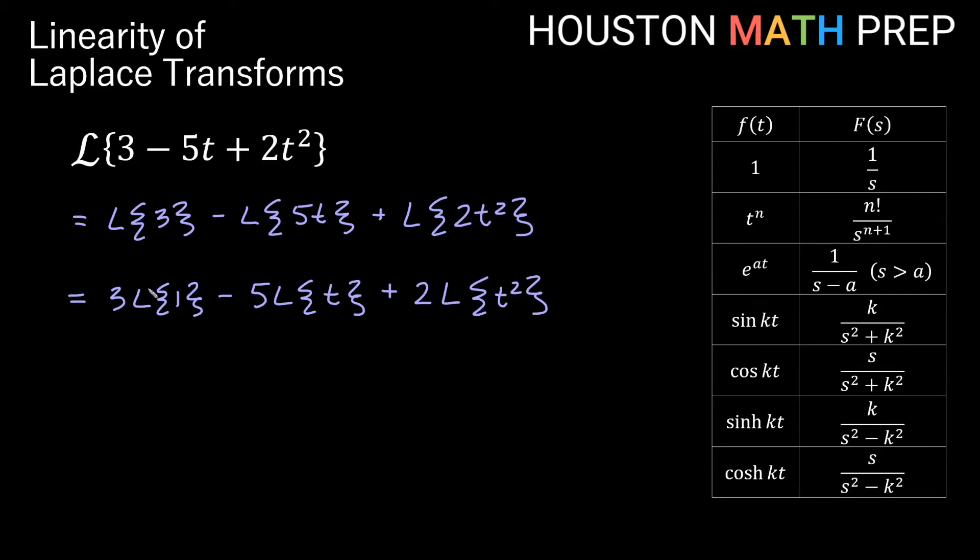And now we just use our chart to evaluate. So the Laplace Transform of 1 will be using this definition here. So this will equal 3 times 1 over s minus 5. Laplace Transform of t, that would be like t to the 1. We would get 1 factorial, which is 1, and we'd have one more power, so it'd be s squared. So we would actually get times 1 over s squared using this definition. And using this definition again, but with a power of 2, so we'll say plus 2 times t squared would give us 2 factorial, which is 2, over s to the 2 plus 1, which would be s cubed. And so we end up with an answer of 3 over s minus 5 over s squared plus 4 over s cubed for this one.